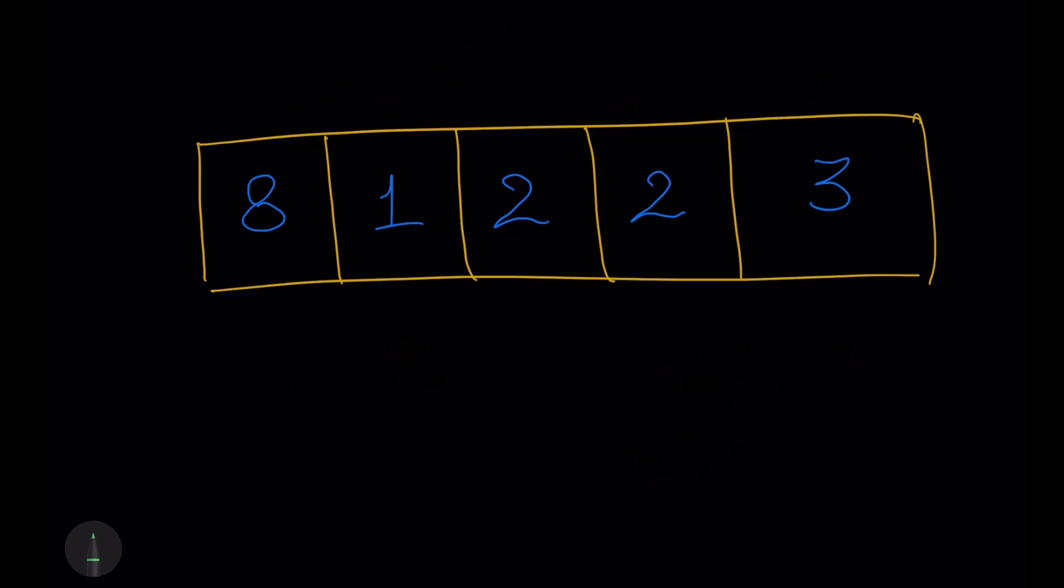The easiest way of finding out how many numbers are there which is less than any particular number will be when this array is given to us in a sorted fashion. So if the array would be like this,